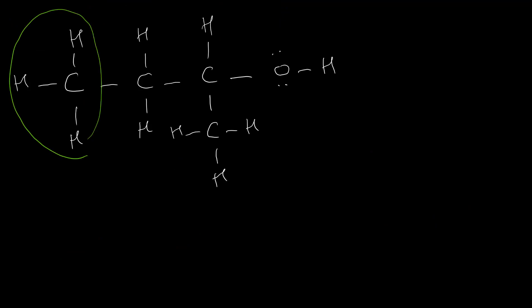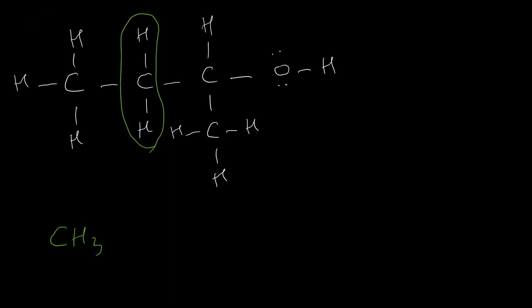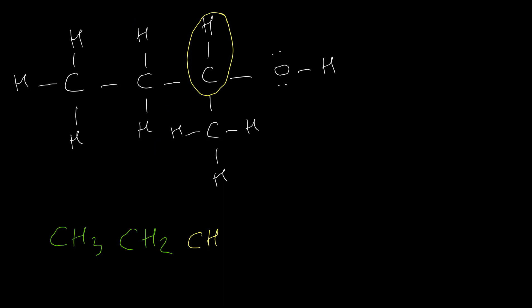Here is a second example. We have CH3, CH3, then CH2, then CH. On this CH we also have a branch — this branch is CH3. When we have substituents or branches, we have to show them inside parentheses. After that we have OH. In condensed structure the lone pairs are normally omitted, and we show hydrogen but we don't show the bond, so we write OH. It's very rare to see lone pairs in condensed structure.